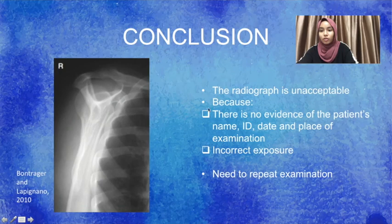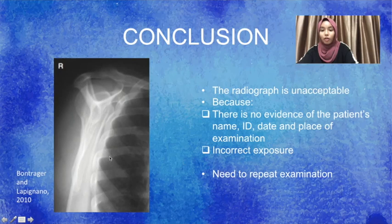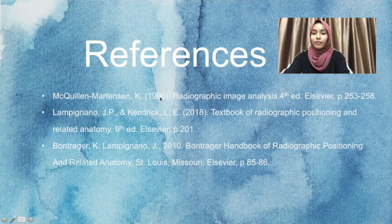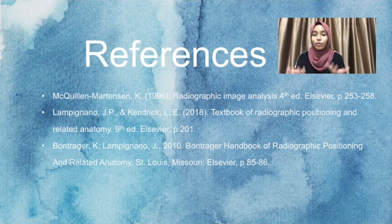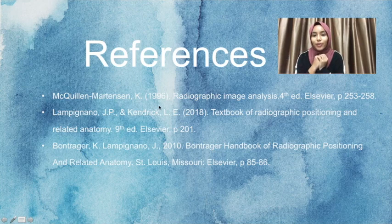For the conclusion, the radiograph is unacceptable because there is no evidence of the patient's name, ID, date, and place of examination, and there is evidence of incorrect exposure, so the examination needs to be repeated. These are the references I used — for information on the PA oblique or scapula Y shoulder, you can check out the books I have attached. Thank you for listening and have a good day.